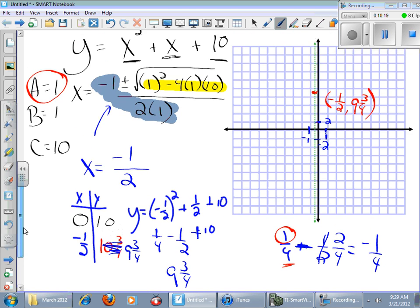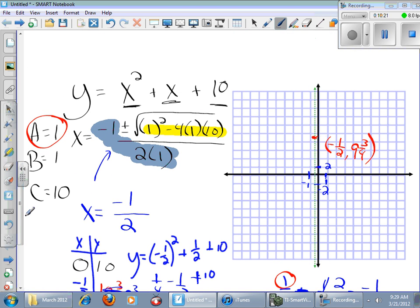I still get 10 for 0. So at 0, I'm going to go up to 10. So I think 10 is right there. And that's the point 0, 10.